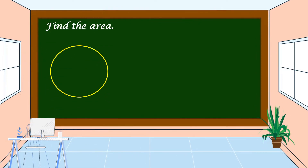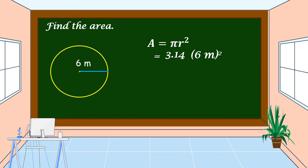Another example: the radius of this circle is 6 meters. To find the area, we're going to use this formula: pi times radius squared. The estimated value of pi is 3.14 and our radius is 6 meters raised to the power of 2. Let's solve — 3.14 times 6 meters times 6 meters.